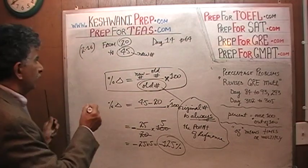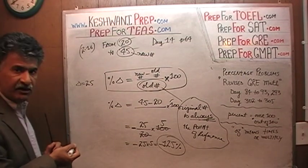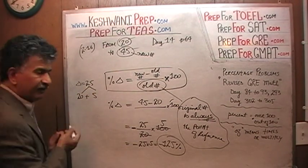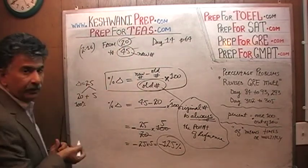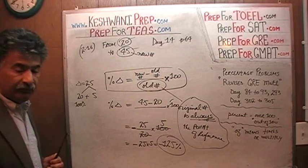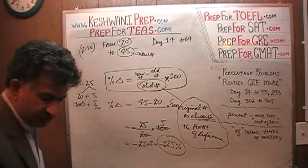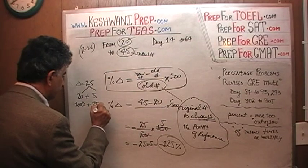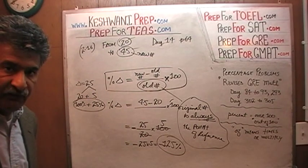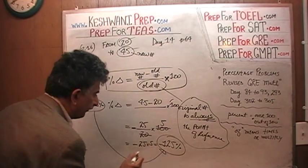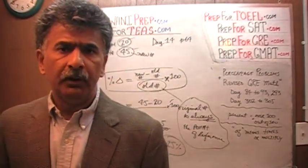Let's verify this answer makes sense. We started with 20 and went to 45, so the change was 25. A change of 20 would have been 100% since that's what we started with. The remaining 5 is one-quarter of 20, which is another 25%. So a change of 25 going from 20 to 45 represents a final change of 125%. I'll see you tomorrow — the video has gotten too long. Bye now.